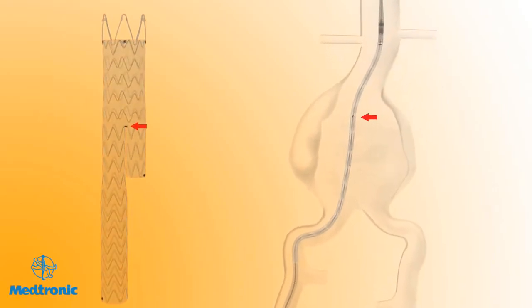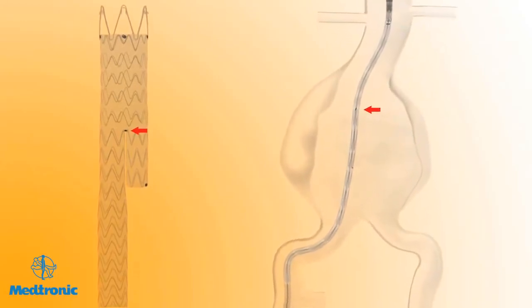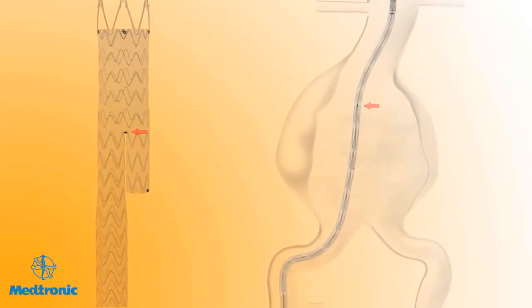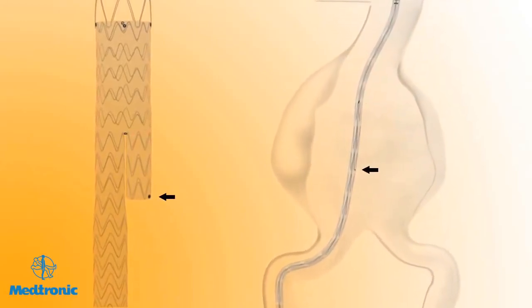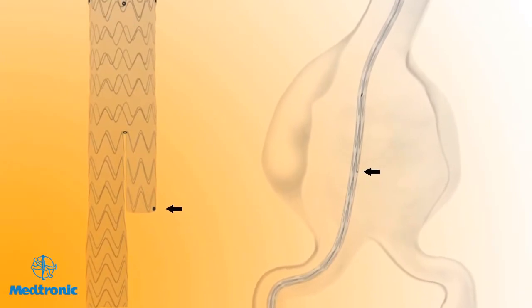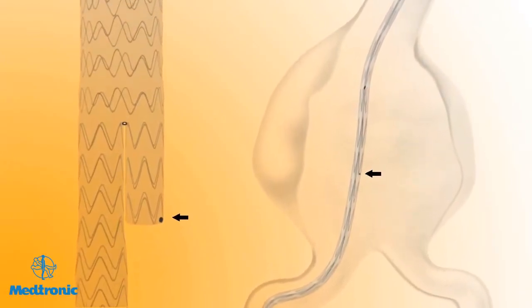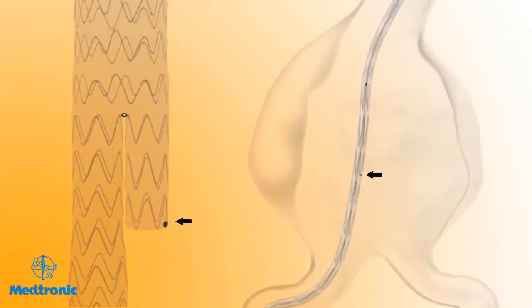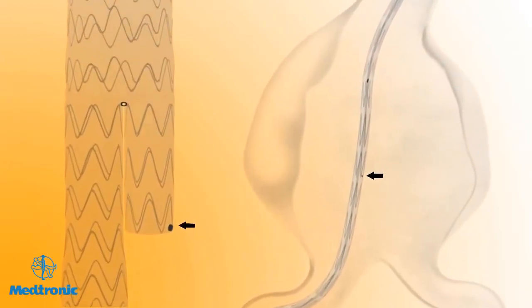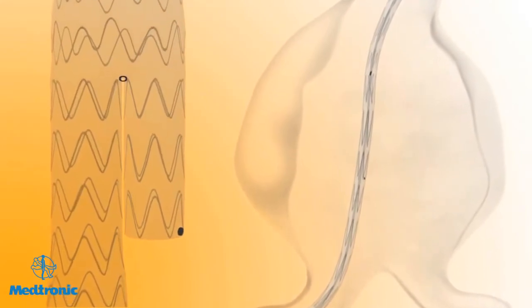There is also a flow divider marker at the center of the bifurcation and a marker at the end of the contralateral stub leg. Use the marker on the contralateral stub leg to locate the contralateral gate before deployment.